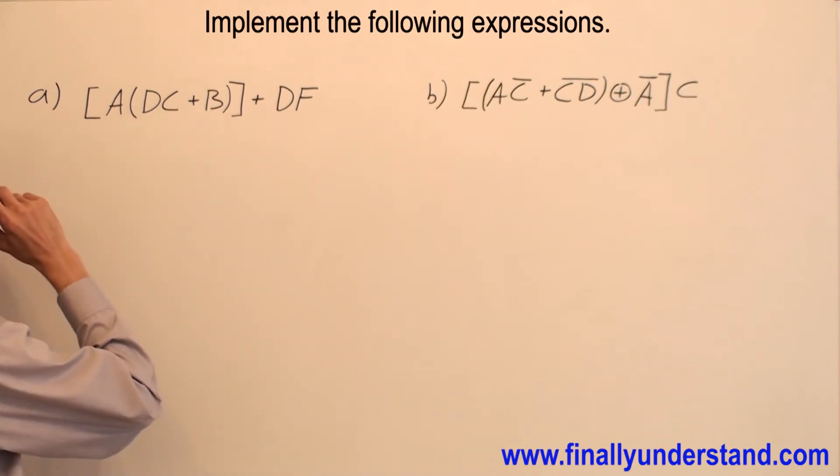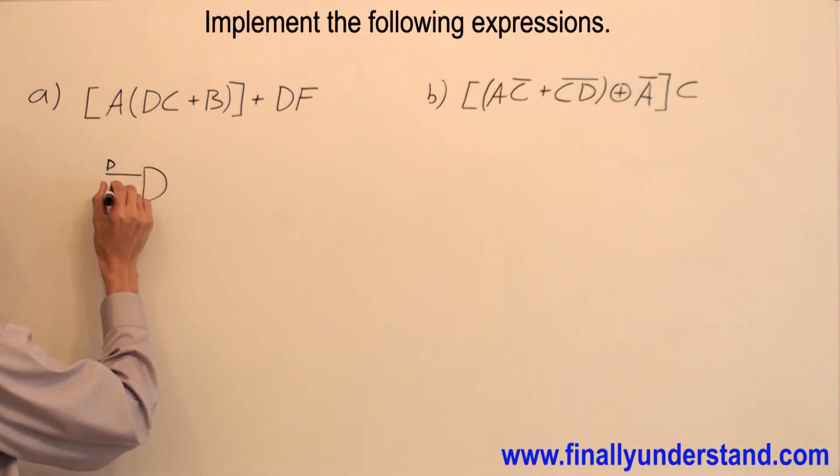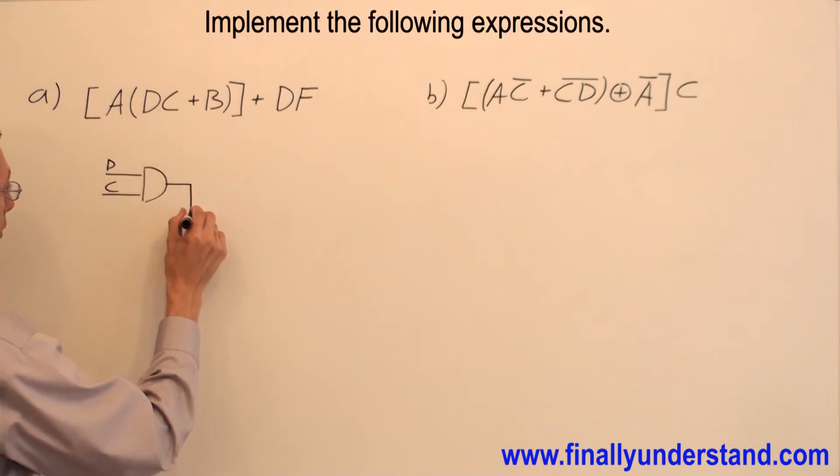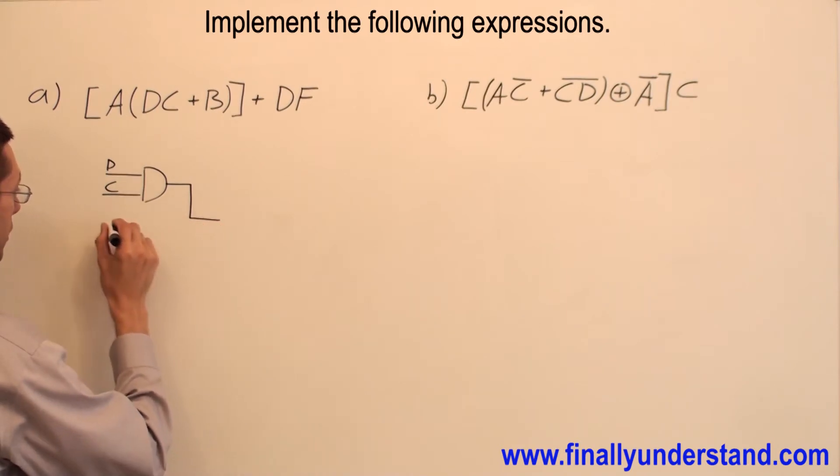I'm going to start with DC. So I have a NAND gate, and I have DC ORed with B.